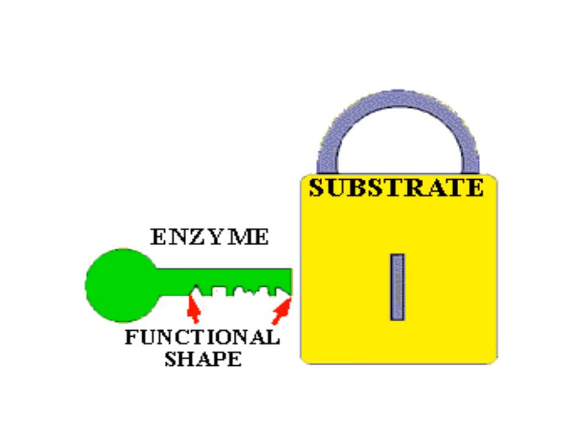The specific action of an enzyme with a single substrate can be explained using a lock and key analogy. In this analogy, the key is the enzyme and the lock is the substrate. Only the correctly shaped key, or active site on the enzyme, fits the lock — or in other words, the substrate.